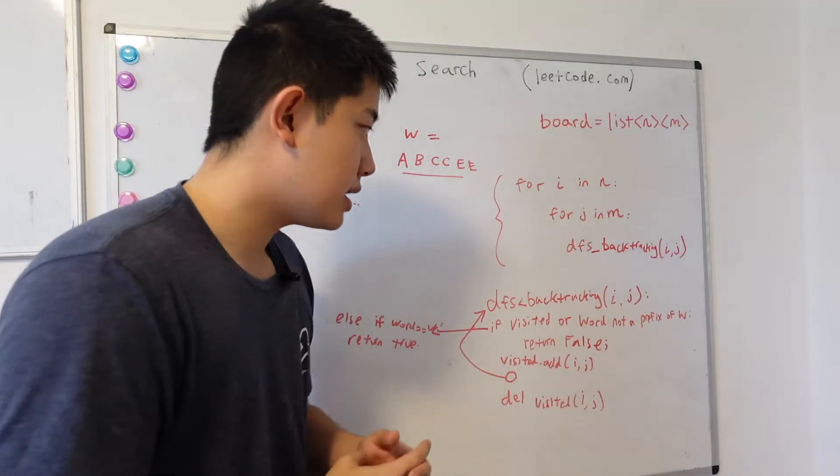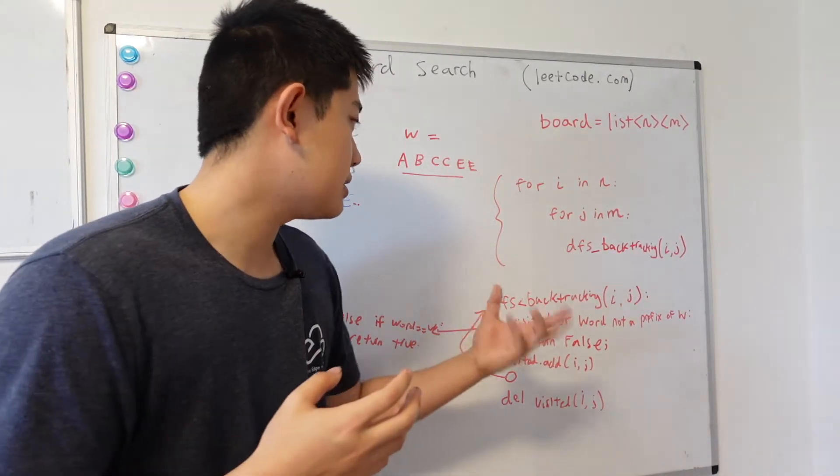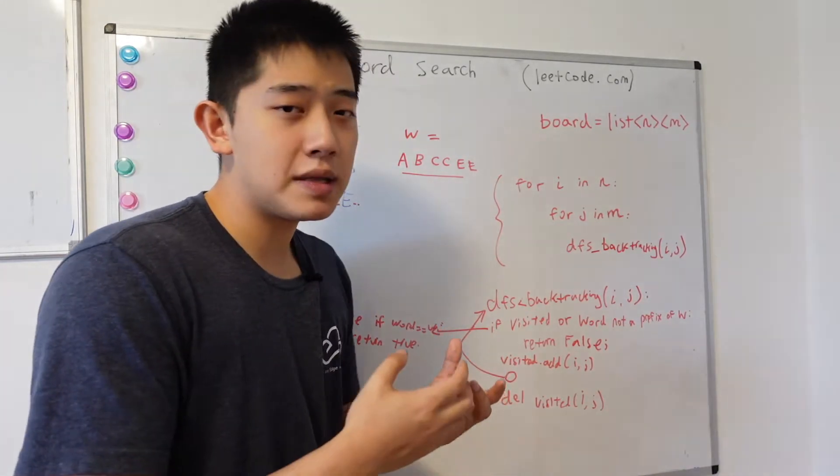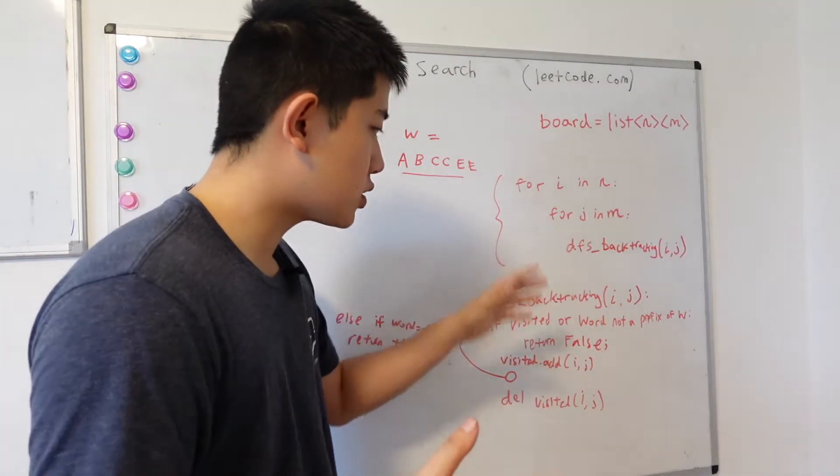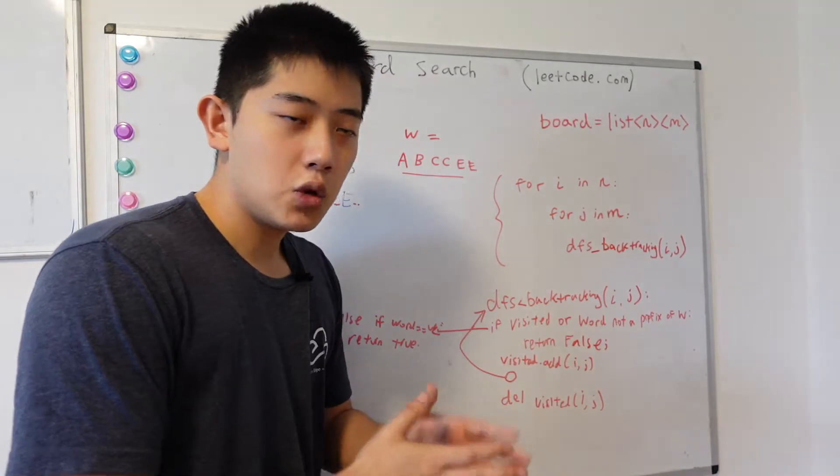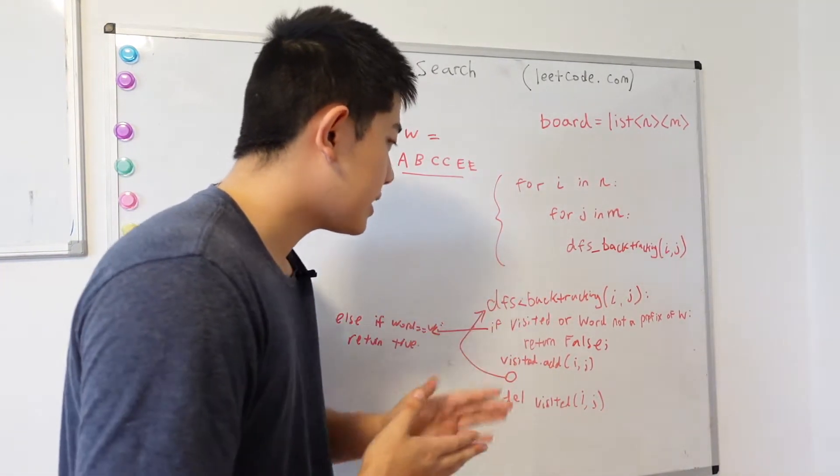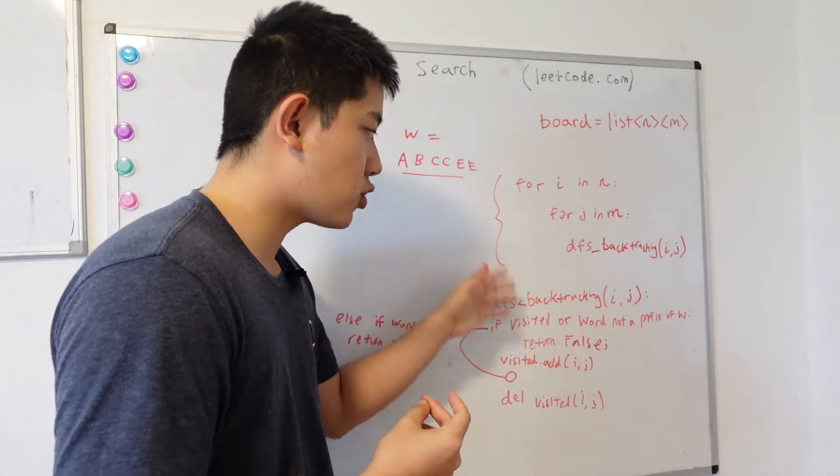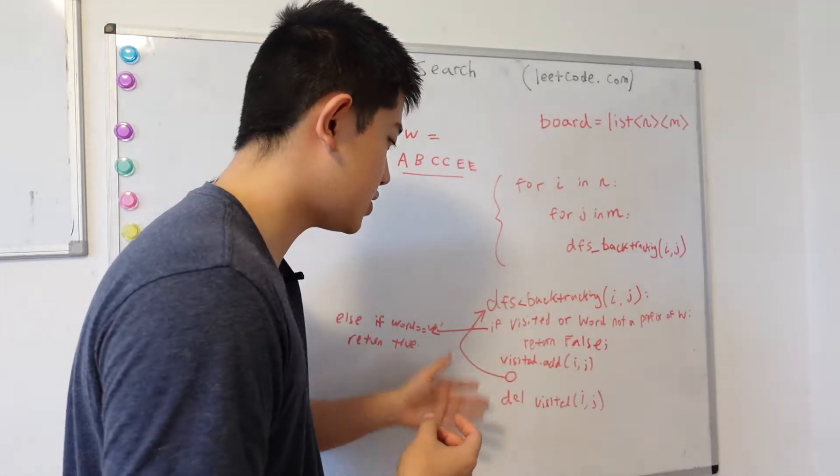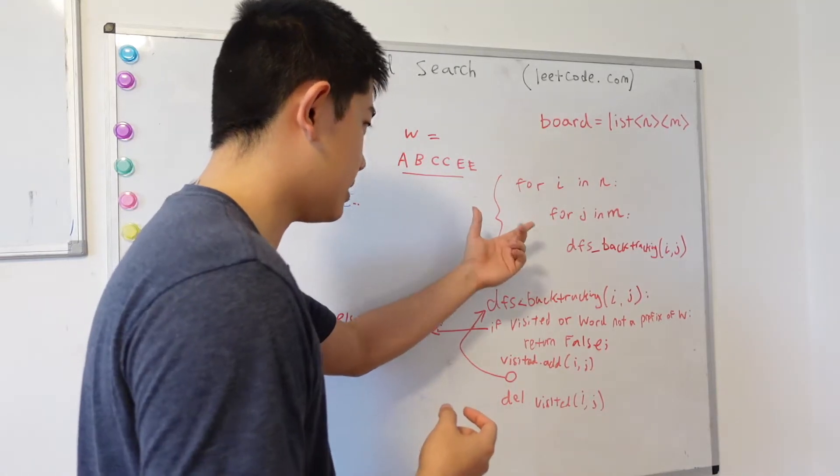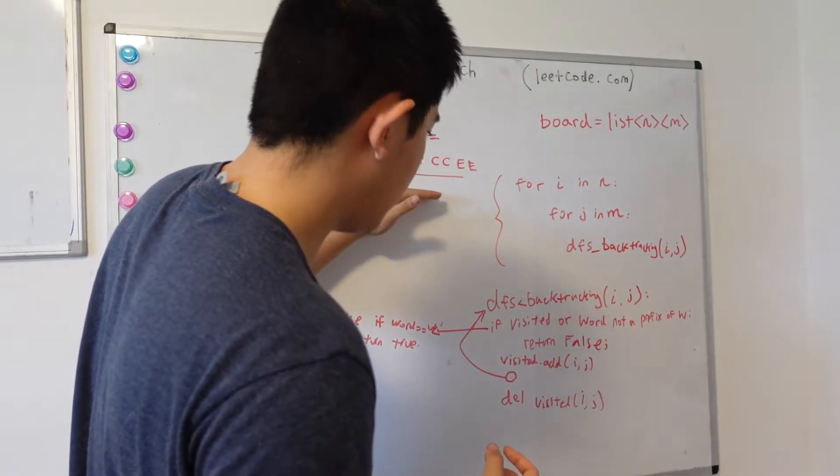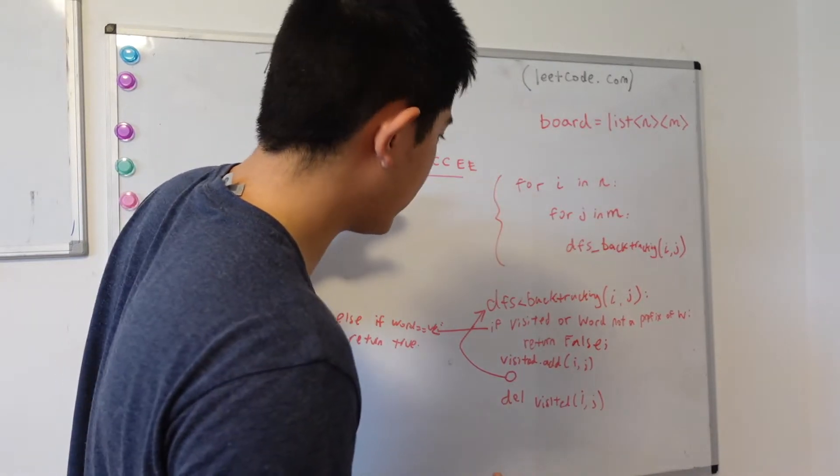One mistake a lot of people make when they design these algorithms is that they unintentionally copy the entire board for every single node that they traverse. You want to avoid that, right? So the key to avoiding that is by making sure that in your depth first search and backtracking steps, you are popping out your path if the current path isn't equal to the word that you're looking for.